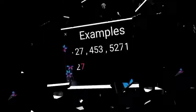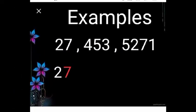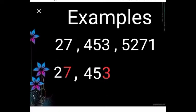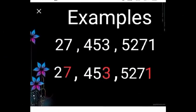Examples of odd numbers: Look at the number 27 — at the one's place, 7 is there, so this is an odd number. Look at 453 — at the one's place, 3 is there, so this is an odd number. Look at 5271 — at the one's place, 1 is there, so this is an odd number.